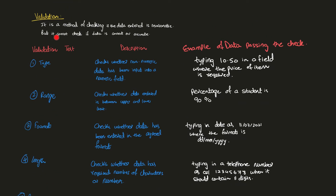Validation is a method of checking if the data entered is reasonable, but it cannot check if it is correct or accurate. For example, in an age field you can enter any age, but it should be a positive age — you cannot enter a negative number. That is something validation checks. However, if you are 18 years old and enter your age as 28, validation cannot catch that. We'll now go over validation tests, their descriptions, and examples of data that passes each check.